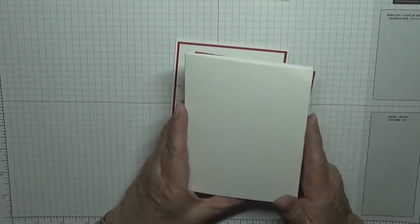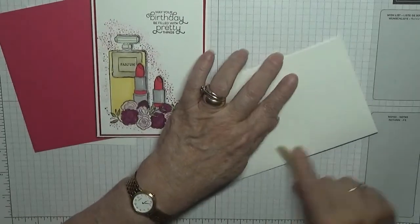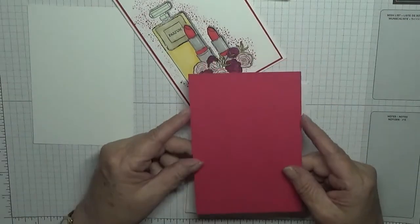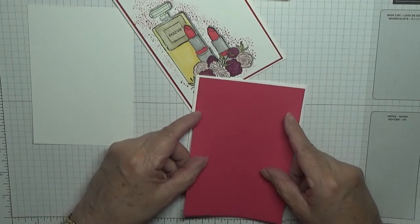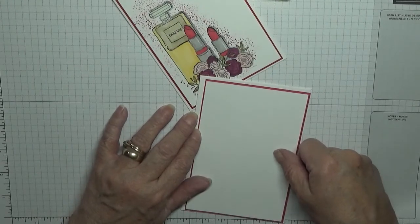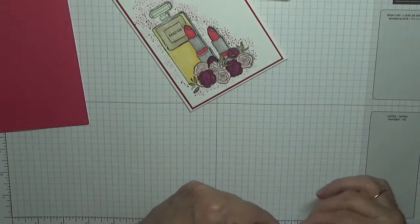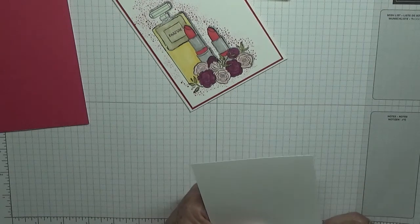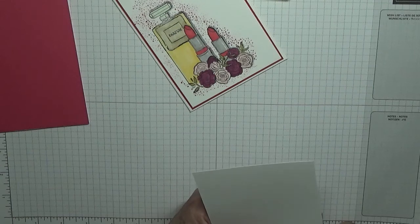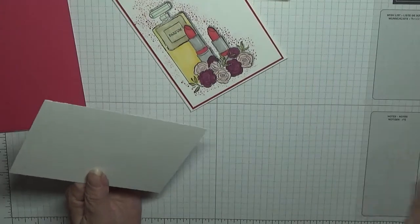Card stock, I've got a card base of 8 1/4 by 5 7/8, scored at 4 1/8, folded in half and it is now burnished. I have a piece of melon mambo at 5 7/8 by 3 7/8, and I have a piece of white card stock at 5 1/2 by 3 3/4. Let's try and get rid of these little bits.